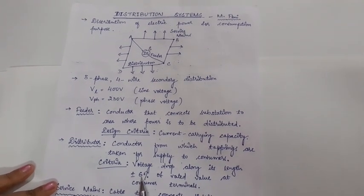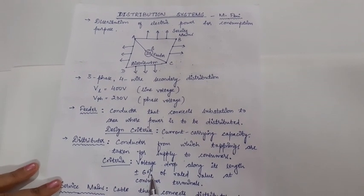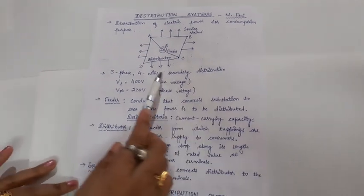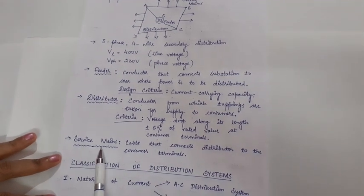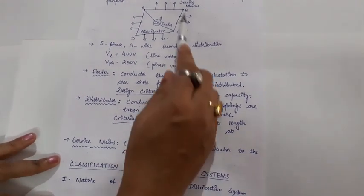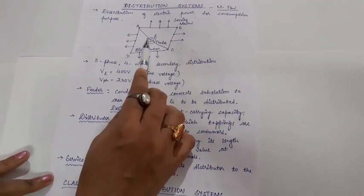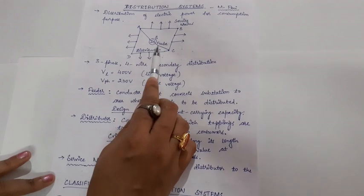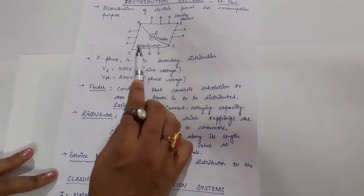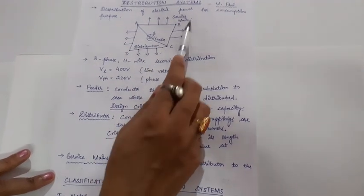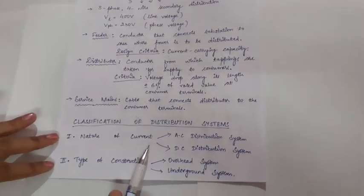The voltage drop should be plus or minus 6% of the rated value at the consumer terminals. From the distributor, the cable that connects the distributor to the consumer terminals is called the service mains. So from the distribution substation, the conductors arising are the feeders, then the conductors connecting to feeders are the distributors, and from the distributors, the tappings taken are called the service mains.